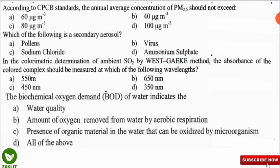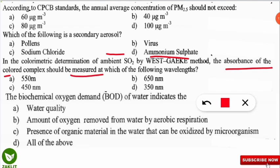The next question: in the colorimetric determination of ambient sulphur dioxide by the West Gaeke method, the absorbance of the colored complex should be measured at which wavelength? The correct option is A — at 550 nanometers. It is also important to note that sulphur dioxide is measured through the West Gaeke method, which is frequently asked in examinations.